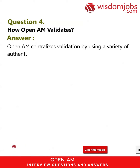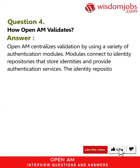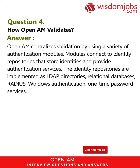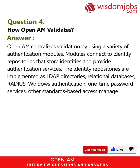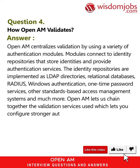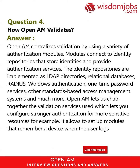Question 4: How does OpenAM validate? Answer: OpenAM centralizes validation by using a variety of authentication modules. These modules connect to identity repositories that store identities and provide authentication services. The identity repositories are implemented as LDAP directories, relational databases, RADIUS, Windows authentication, one-time password services, and other standards-based access management systems. OpenAM lets you chain together validation services, allowing you to configure stronger authentication for more sensitive resources, such as modules that remember a device when the user logs in successfully.